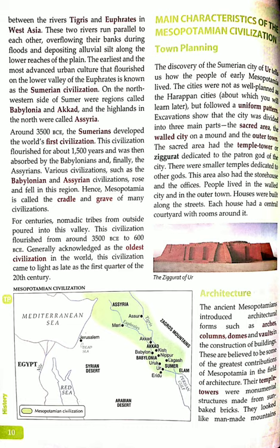I hope you recorded everything. So let's start with today's lesson. We will start with the main characteristics of the Mesopotamian civilization — that is, the main features. Town planning means making plans regarding town-making.